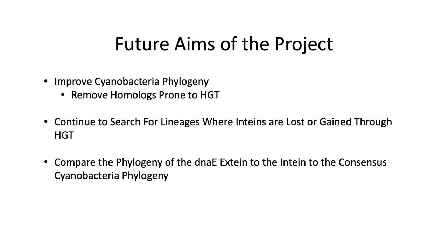In the future, I am currently working on improving the cyanobacteria phylogeny by tightening down the number of homologues and removing genes that are prone to horizontal gene transfer (HGT), in order to get tighter resolution and higher bootstrap values for each branch. I would like to continue searching for lineages where intines are lost or gained, or possibly gained through HGT, and look for further lineages where there is a mixture of intine-containing and non-intine-containing related genomes. I would also like to compare the phylogeny of DNA-E extines to the DNA intines against the consensus cyanobacteria phylogeny, to see if there is conservation of intine sequences.